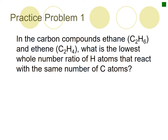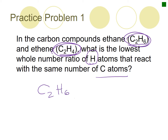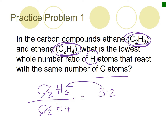Let's try another practice problem. The carbon compounds ethane C2H6 and ethylene C2H4 — what is the lowest whole number ratio of hydrogen atoms that react with the same number of carbon atoms? Both have 2 carbons, so we can directly compare. For C2H6 versus C2H4, the carbons are in a 1 to 1 ratio. Looking at the hydrogens, if we reduce that, it's a 3 to 2 ratio — we need 3 times the amount of hydrogen versus 2 times the amount of hydrogen for the other compound.